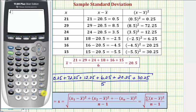and to two decimal places, we have approximately 5.32 for our sample standard deviation.